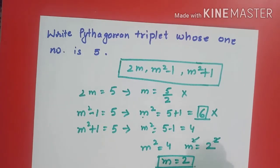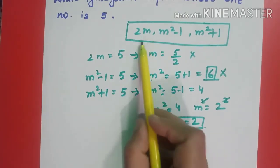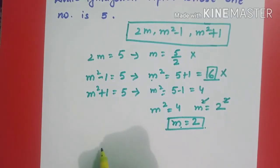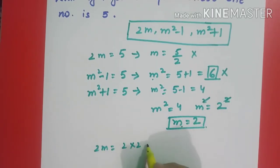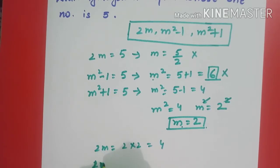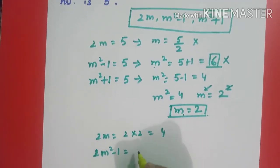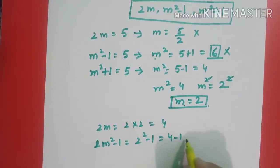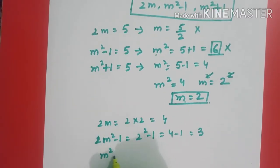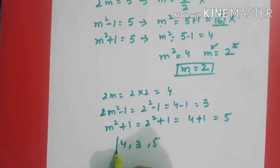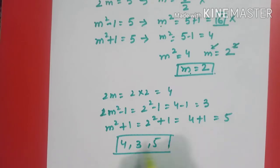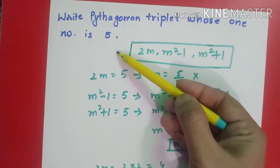So I found m is equal to 2. Now I can easily find out the Pythagorean triplet by putting this value of m in it. Let's see. 2m will become 2 into 2, which is 4, because m's value is 2. Next, we have m square minus 1. m's value is 2, so 2 square minus 1, 4 minus 1 is equal to 3. Next, m square plus 1, so 2 square plus 1, 4 plus 1 is equal to 5. So my triplet is 4, 3, and 5. This triplet has one of the numbers as 5.